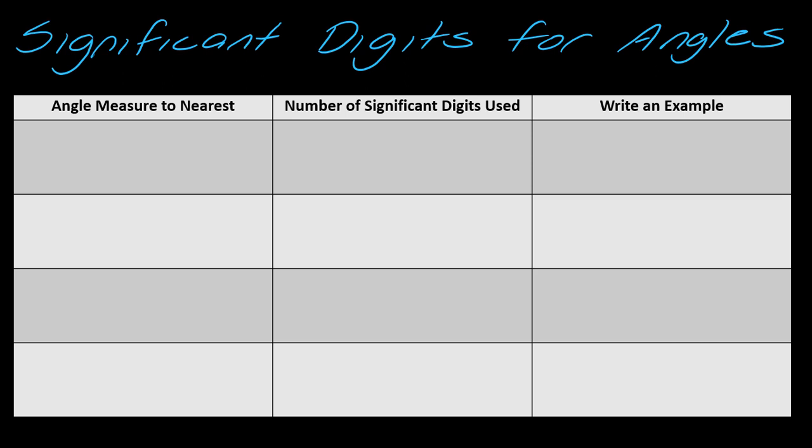I want to take a second to talk about significant digits for angles. I have a few different categories. First, a degree in general is going to have two significant digits. Things like 42 degrees, 15 degrees are considered to be two significant digits.